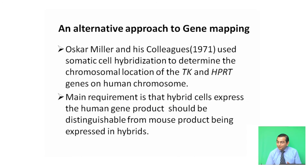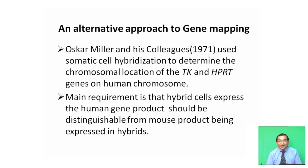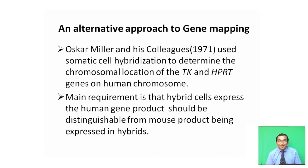An alternative approach to gene mapping is cellular hybridization. Oscar Miller and his colleagues in 1971 used somatic cell hybridization to determine the chromosomal location of TK and HPRT genes on human chromosomes. The main requirement is that hybrid cells expressing the human gene product should be distinguishable from the mouse product being expressed in hybrids.